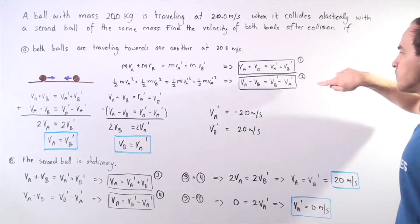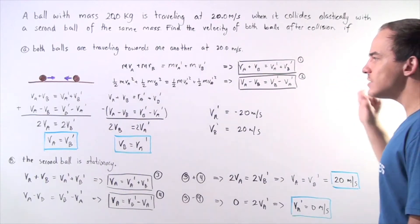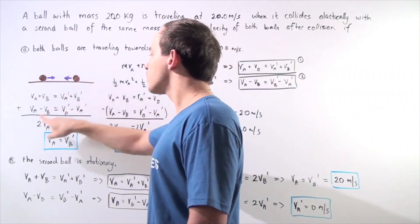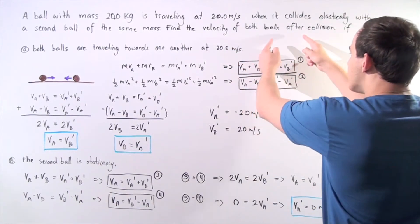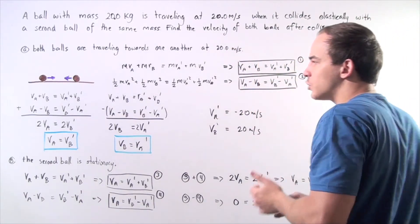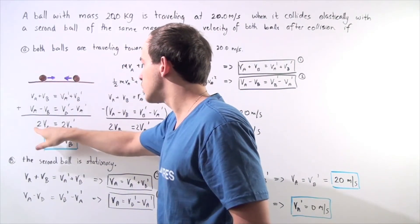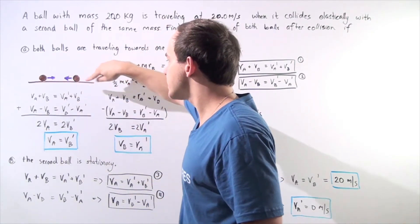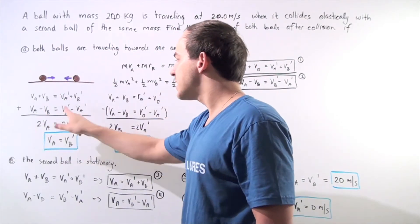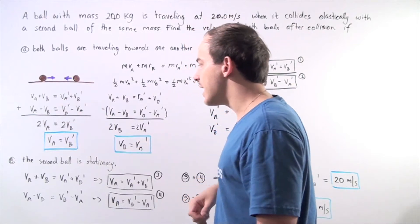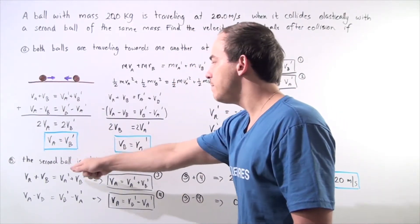Calling these equation one and equation two, if we add them together, we add the left sides and the right sides. The VB terms cancel, leaving two V-A, and the VA prime terms cancel, leaving two V-B prime. The two's cancel on both sides, giving us V-A equals V-B prime.